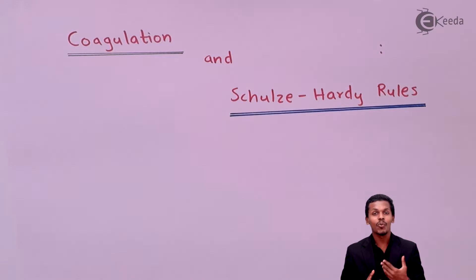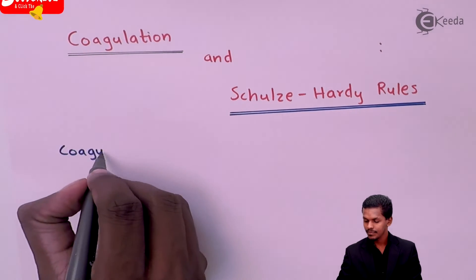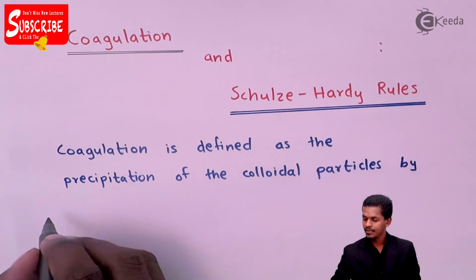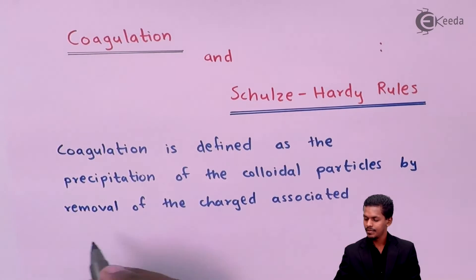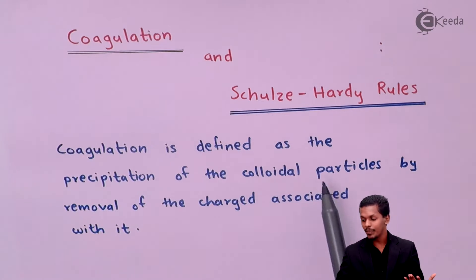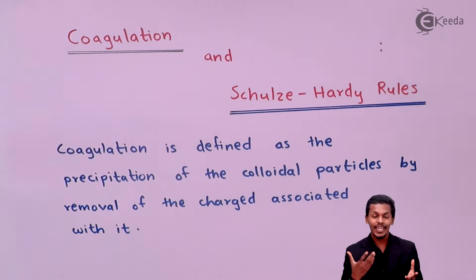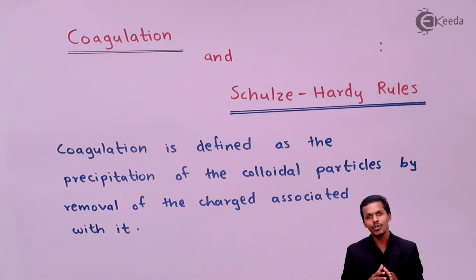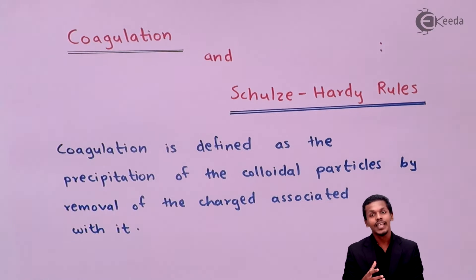Coagulation is defined as the precipitation of colloidal particles. We know that colloidal particles can be of positive charge or negative charge. This attraction of colloidal particles towards other particles so as to form a larger molecule or larger particle is basically known as precipitation.